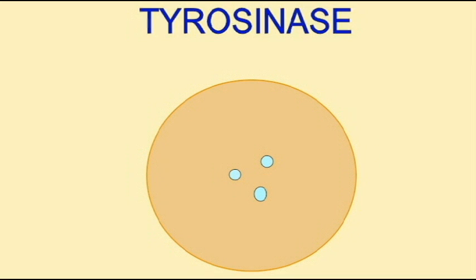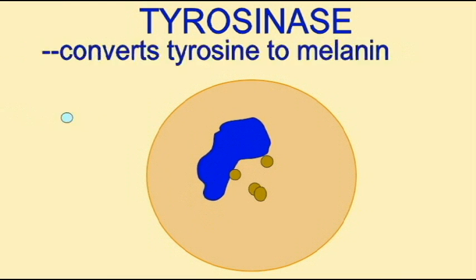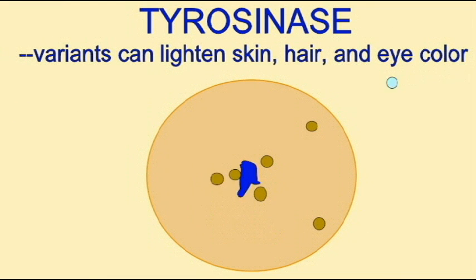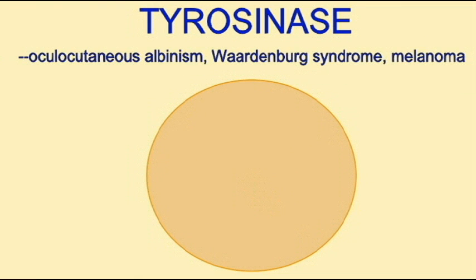There are variations in the gene tyrosinase which exist in human populations. Some of these variations can affect the pigment of skin and hair, lightening it. And there are also mutations which cause pigmentation disorders, such as albinism.